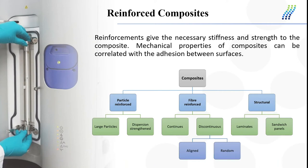Reinforced composites contain reinforcement material, which gives the necessary stiffness and strength to the composite. They are multi-component systems and their mechanical properties can be correlated with the adhesion between surfaces. Composites can be categorized based on the matrix material or the number of reinforcement materials in them. Mainly composites can be reinforced with a particle or a fiber, or there can be a structural reinforcement.